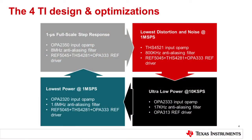Number one would be the 1-microsecond full-scale step response. For that, we've chosen components including the OPA2350. We've also targeted lowest distortion and noise at 1-megasample per second — namely the sampling speed of the ADC. For that, we've chosen the THS4521 as the input amplifier and a reference called the REF5045, among other devices.